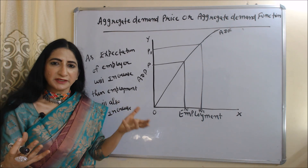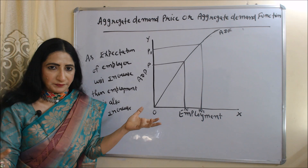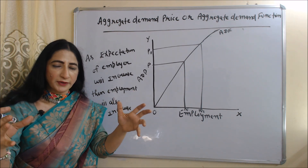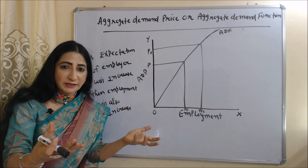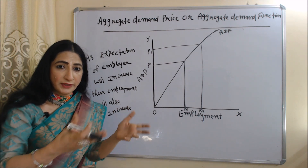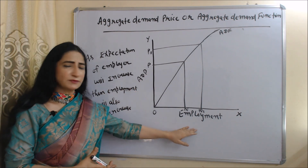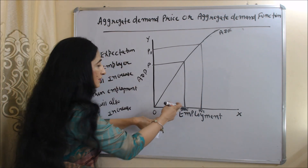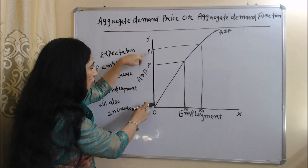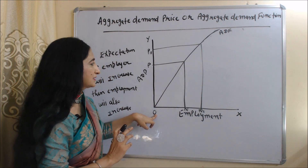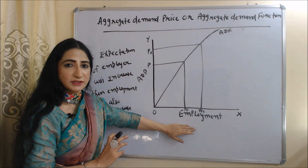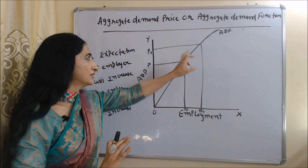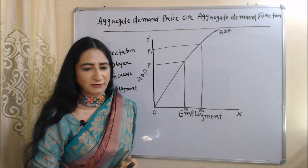Aggregate demand price and employment have a positive relation — as the employer's expectation from the sale of products increases, employment will also increase, as he will hire more employees. In this diagram, the x-axis shows employment and the y-axis shows aggregate demand price. As aggregate demand price increases from OP to OP1, employment also increases from ON to ON1. This curve is called the aggregate demand function (ADF) curve.